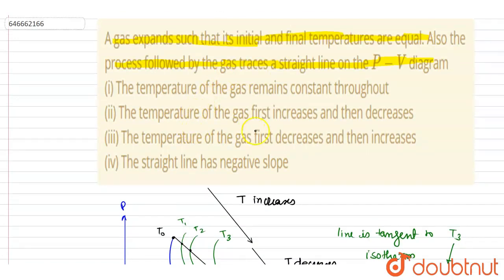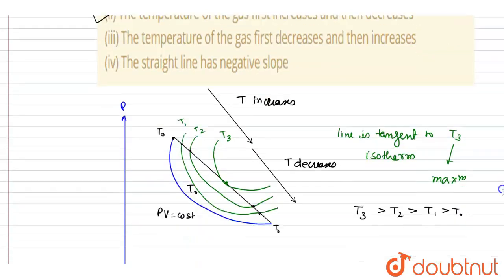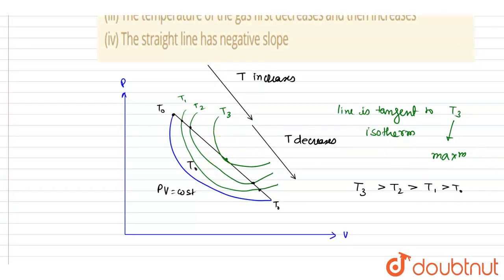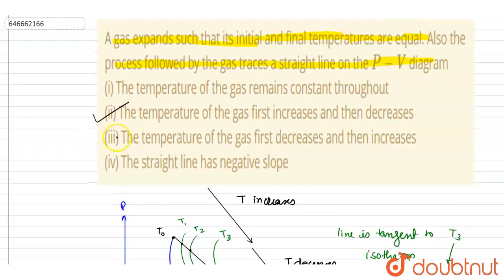The temperature of the gas first increases then decreases - so yes, first increases then decreases. Straight line has a negative slope - yes, straight line you could see it is having a negative slope, right? So this is true.